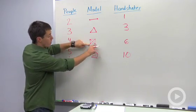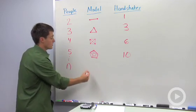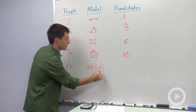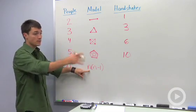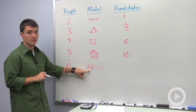Here I could shake one, two, three times. So I'm seeing that the number of handshakes is one less than the total number of people, because I can shake hands with everyone there except for myself.